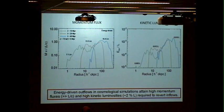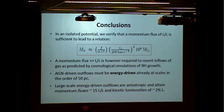Just to show these last plots, this shows the momentum flux and the kinetic luminosity of the energy-driven outflows as a function of radius. You can see that we have these momentum boosts, several times L over C, like the observed ones. This is what you need to actually revert the inflows and prevent the central regions from being replenished. Typical kinetic luminosity is a few percent of the bolometric luminosity, like required. I'll now just leave you with the conclusion slide. Thank you.